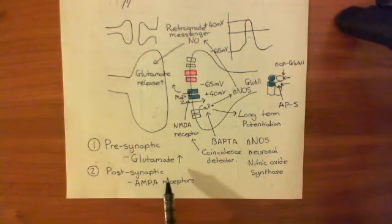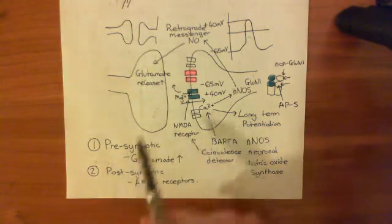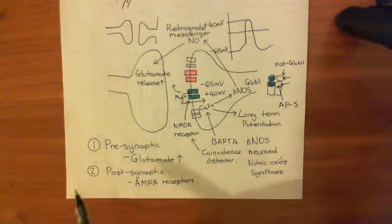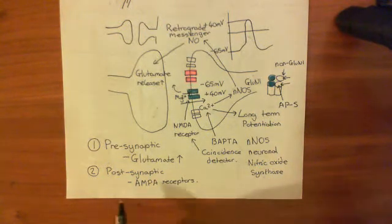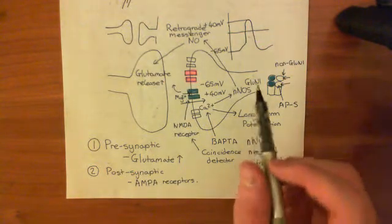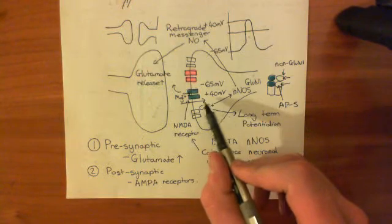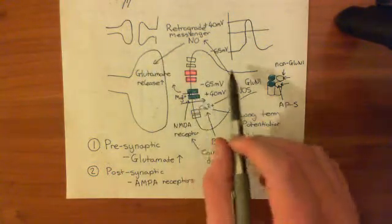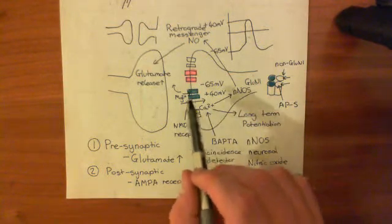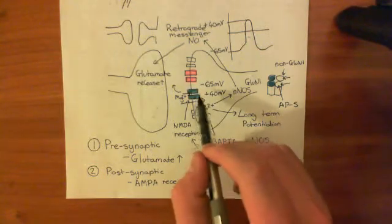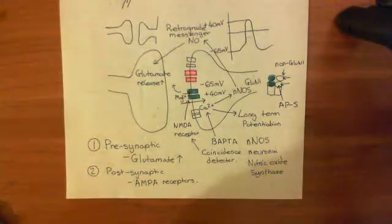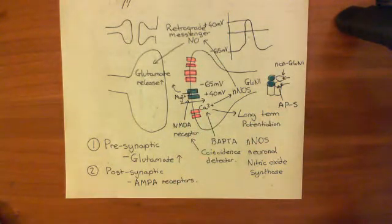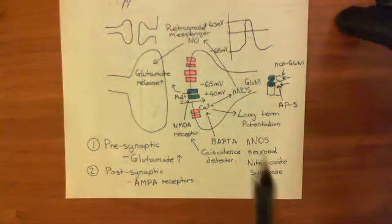Now let's talk about this postsynaptic mechanism. In my opinion, probably both mechanisms are used to strengthen this synapse and cause long-term potentiation. But at the moment, the jury is out with regards to the truth of this mechanism. So I'm going to talk about an experiment involving postsynaptic mechanisms. The supposed postsynaptic change is that when calcium goes up — indicating that the axon terminal released glutamate and an action potential fired — that calcium then needs to somehow lead to more AMPA receptors being expressed in the membrane.